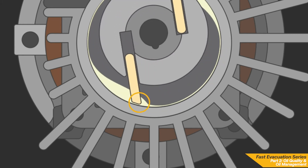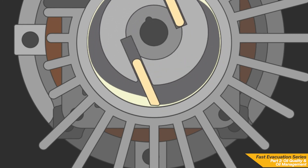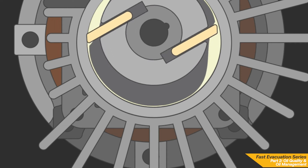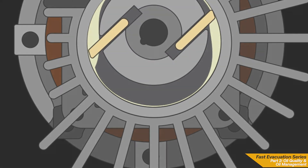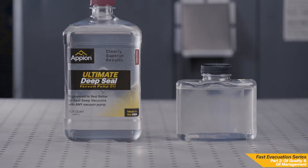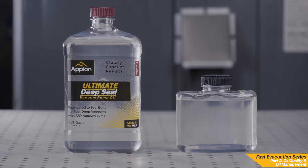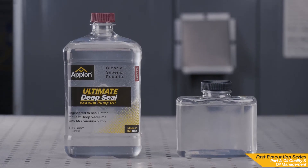Choosing the best oil will help maintain the integrity of this seal in a deep vacuum before degrading. There are several factors to consider when choosing a vacuum pump oil for the HVACR industry, the most important being vapor pressure.